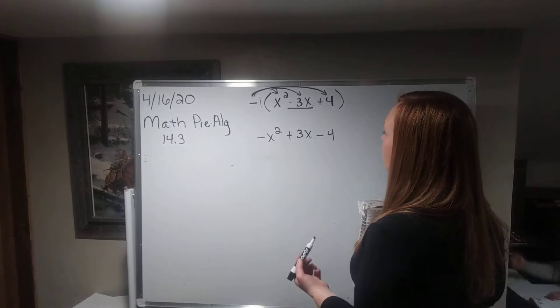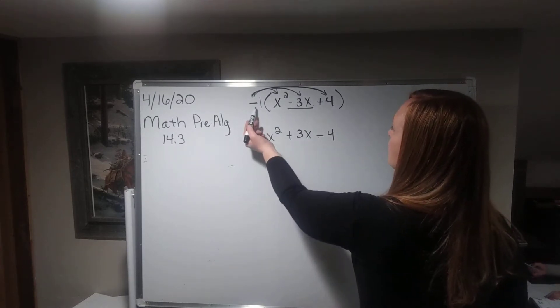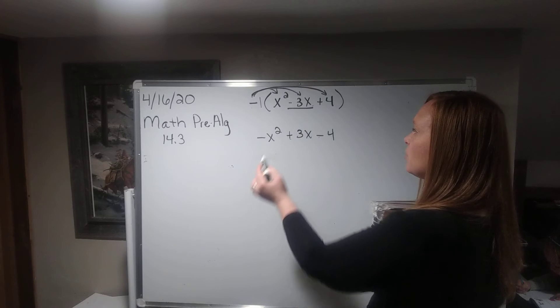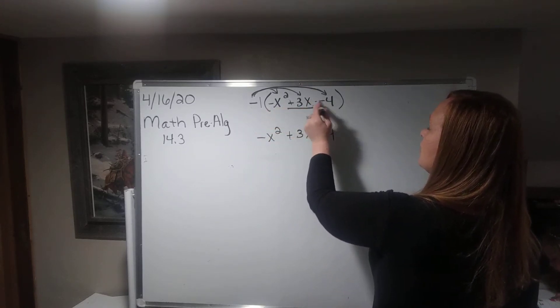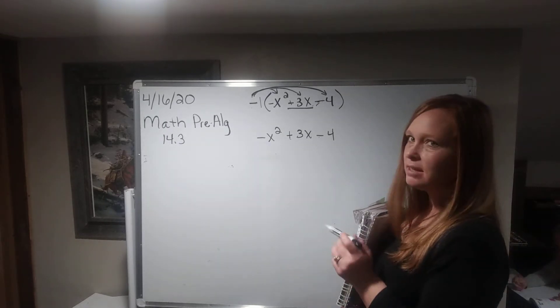Notice that when we put a negative on the outside, the signs all change for each term. Okay, so when you come across this and you see a negative on the outside, you just think, okay, I can take this out of the parentheses if I change the sign to each one.